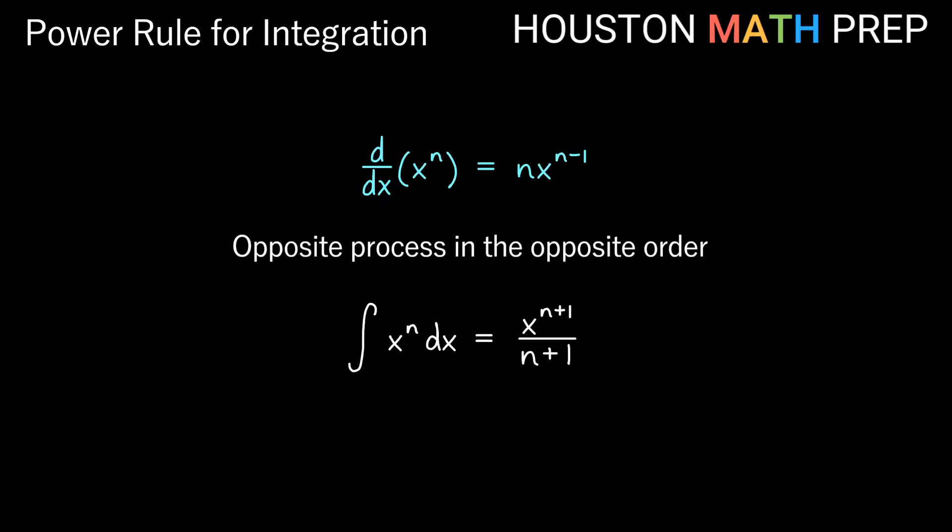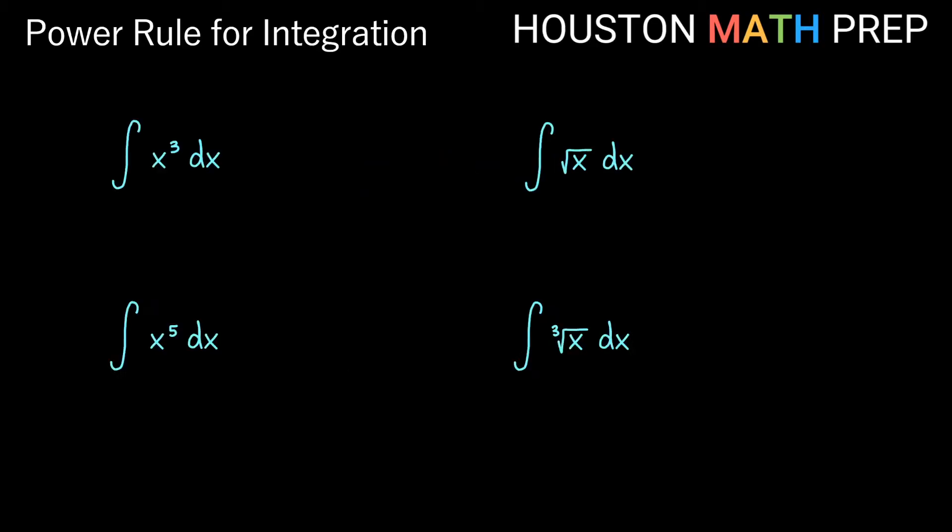So our antiderivative formula for x to the n dx is x to the n plus one, divided by n plus one. And we always want to remember to include our constant of integration. Let's take a look at some examples.